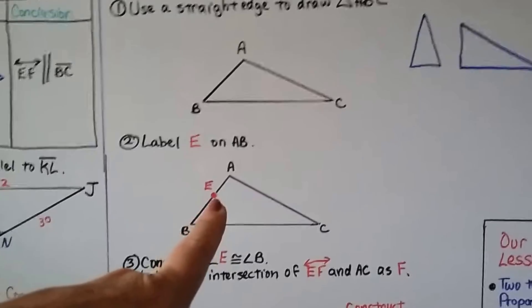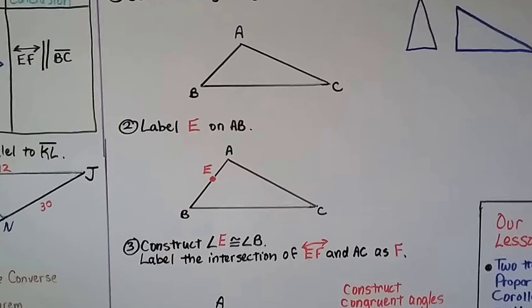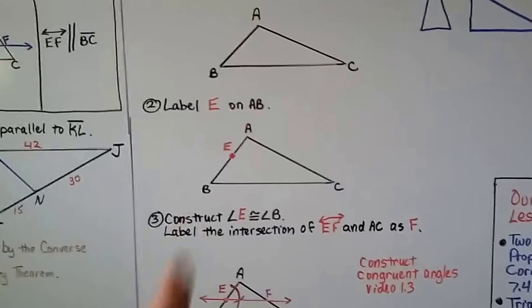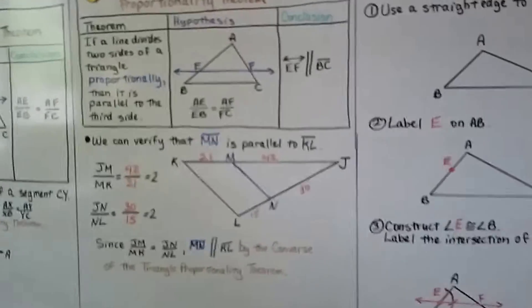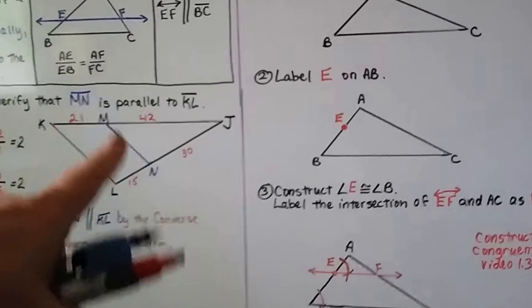We're going to label a point on AB. We're going to label it E. And you can put it anywhere you want, but keep in mind we're trying to recreate this or this. Or something like this.